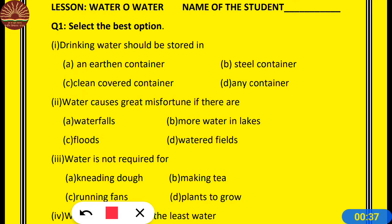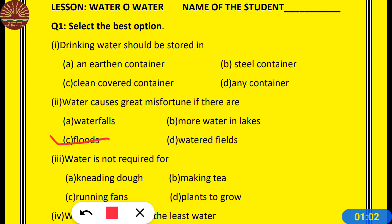Question number 2: Water causes great misfortune if there are — misfortune means durbhaag, koi vipatti, koi dikkat jis se hoti hai. Options: waterfalls, more water in lakes, floods, watered fields. The answer is floods. Flood means barh. Jab kahi par barh aa jaati hai, toh logon ke liye bahut bhaari dikkat ho jaati hai.